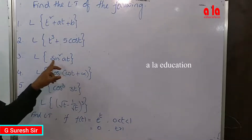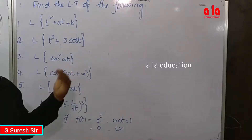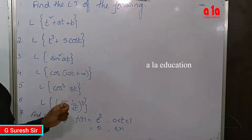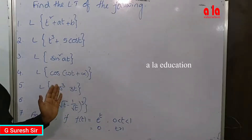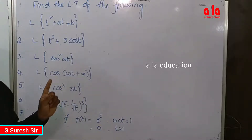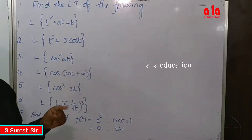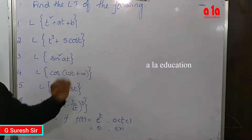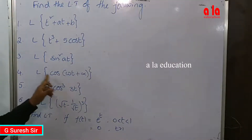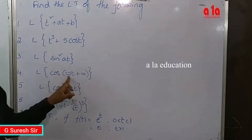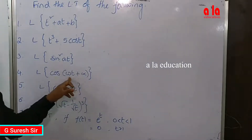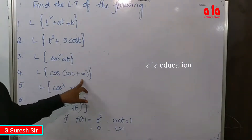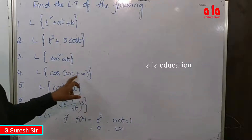For sine squared, convert using the trigonometric identity: sine squared theta equals one minus cosine 2 theta over 2, giving one half of Laplace transform of 1 plus Laplace transform of cosine at. Also using the formula: cosine A cosine B plus sine A sine B.